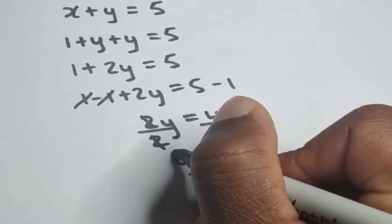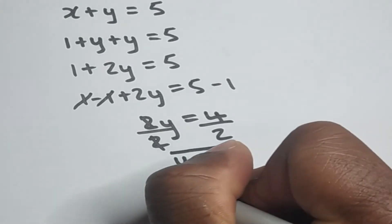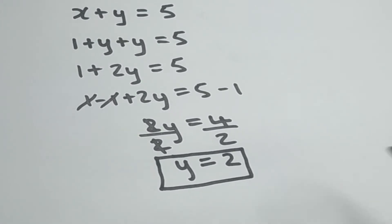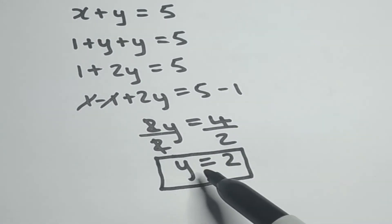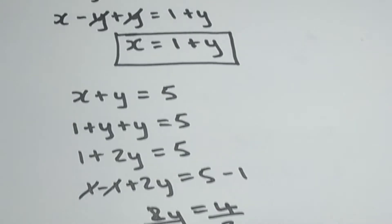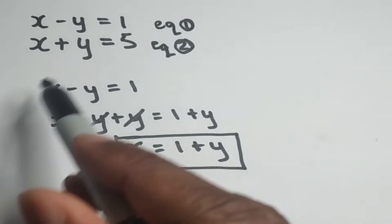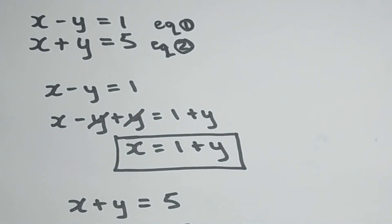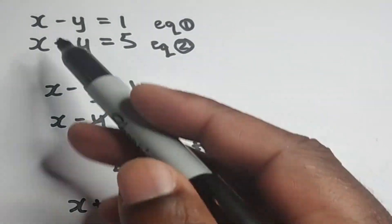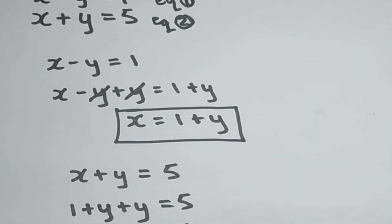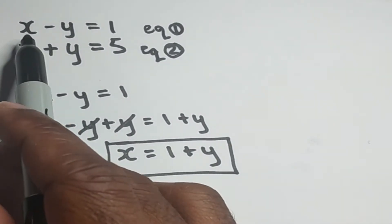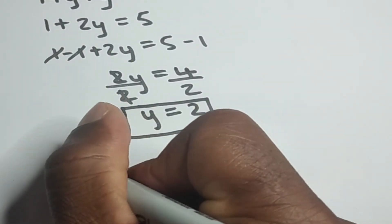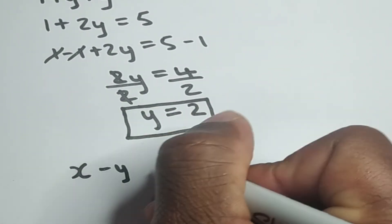Now what we want to know is the value of x. We can obtain our x value by substituting the value of y, which is two, into either equation one or equation two and then transposing for x. I'm going to use equation one: x minus y is equal to one.